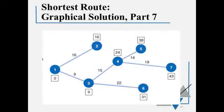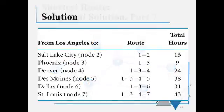There's our solution. Those are all the paths that we actually used and the numbers on them, and we can see how long it takes us to get to any of the nodes in our model. So the solution to get to Salt Lake City at node 2, we take 1 to 2, it's going to take 16 hours. Phoenix, node 3, 1 to 3, 9 hours. And to get to St. Louis, the last one on the list, 1 to 3 to 4 to 7, 43 hours.